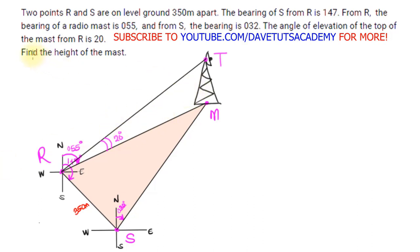This is the full interpretation of the question that will help us solve it. The question asks us to find the height of the mast. There are two triangles: the first triangle on the ground level colored in light brown, and a second triangle involving R, the base of the mast M, and the top T. From R, a person raises their line of sight at 20 degrees to see the top of the mast.